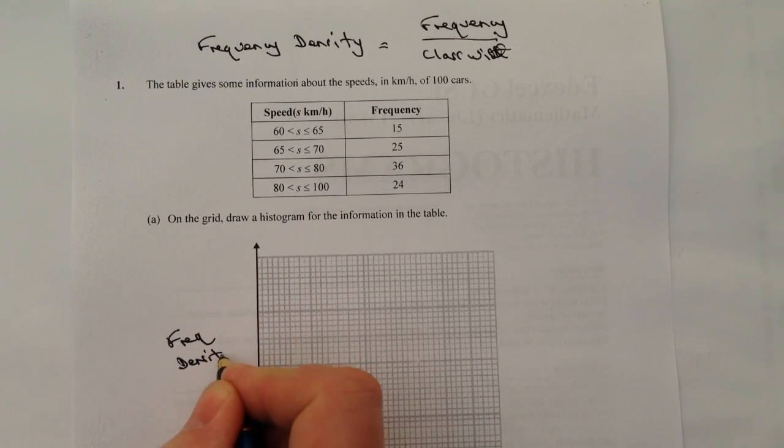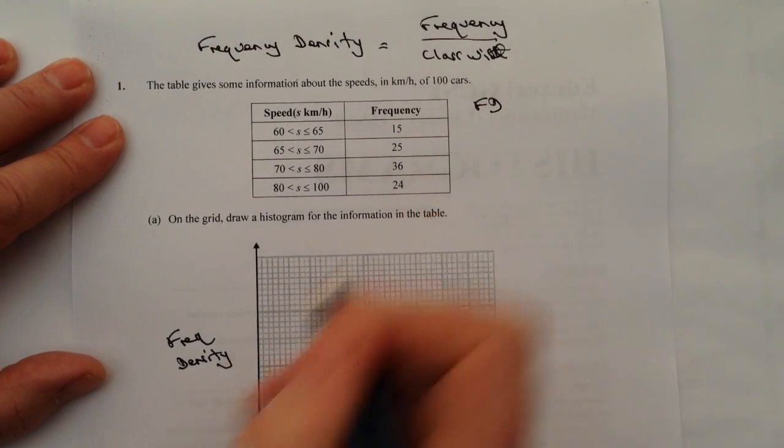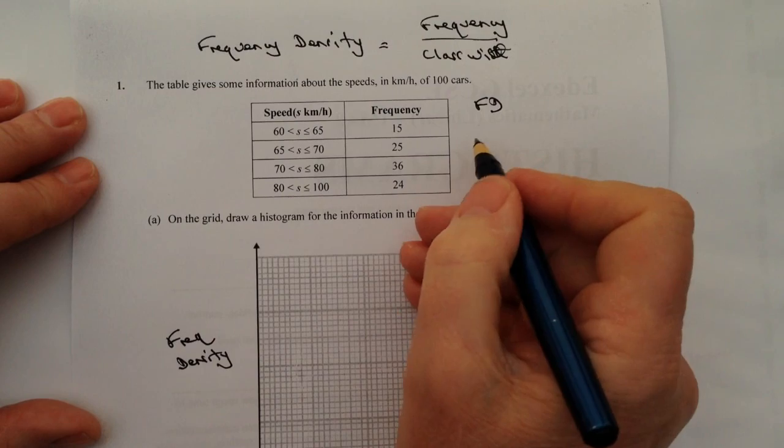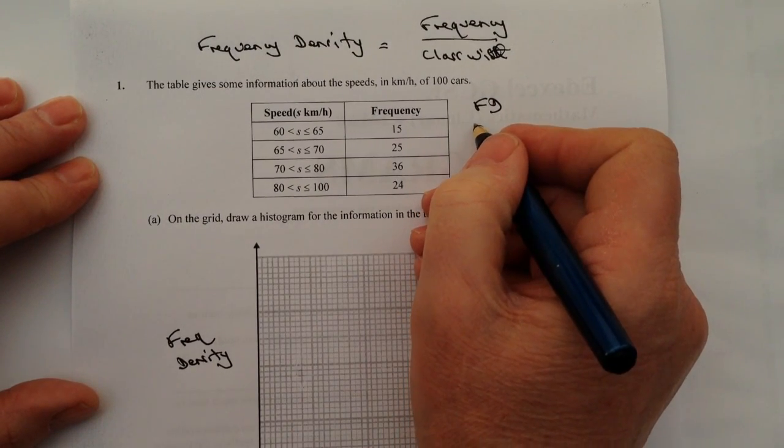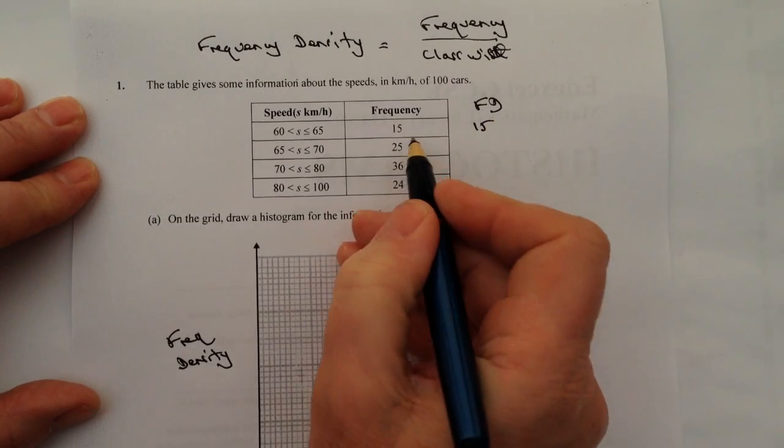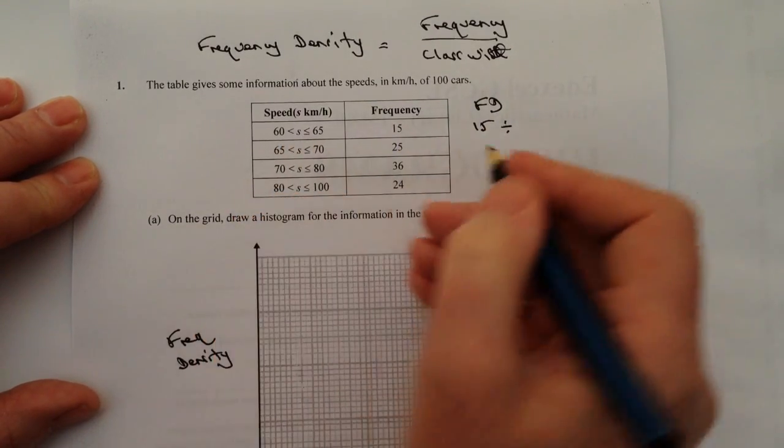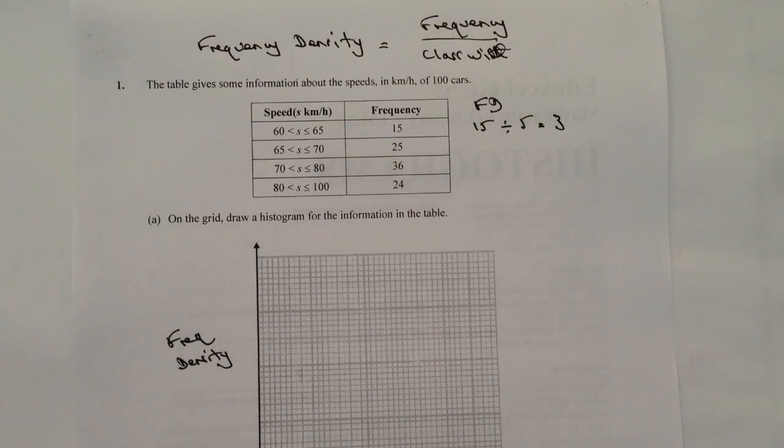Okay, and that's what we're going to calculate using the information in the table. So really you could put in a separate column if you want to, you can head it up as frequency density. But providing you show your working, in this particular case we've got a frequency of 15, and we're going to divide it by a class width of 5, so that's going to give a frequency density of 3.